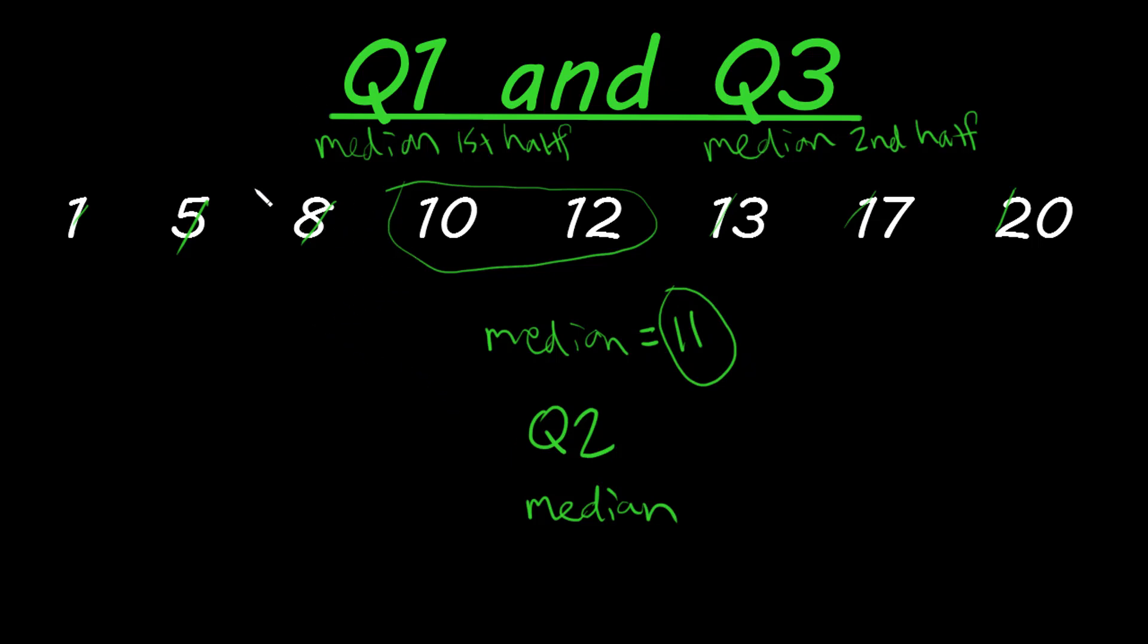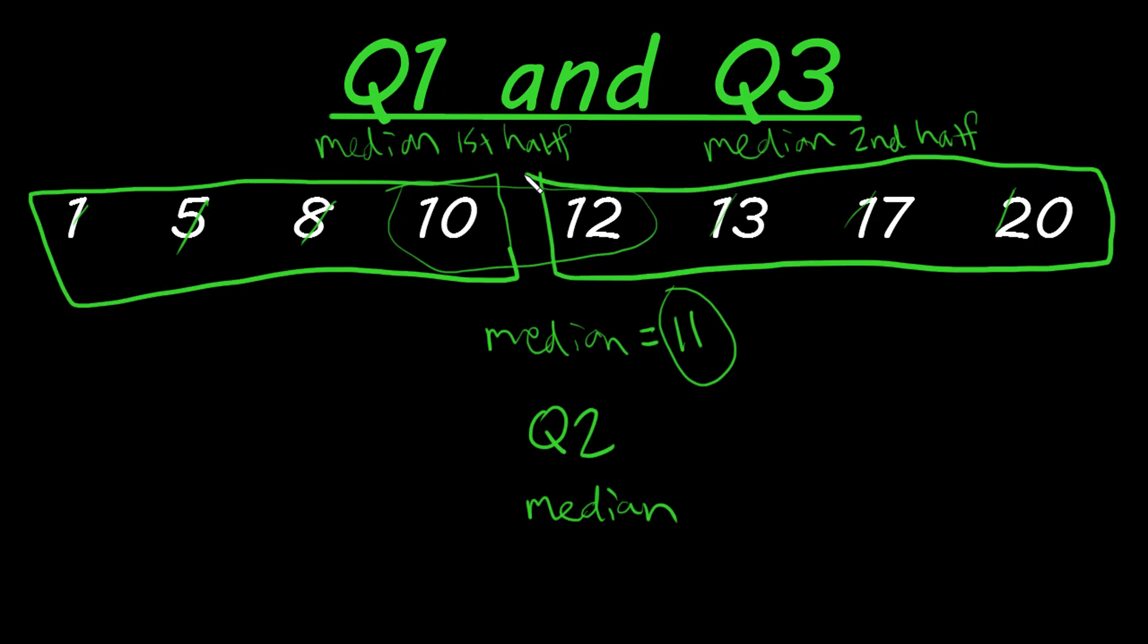So to find Q1, we need to take the median of our first half of data. We have eight data points. We're going to split this into four and four. This is our second half. This is just a quick way to find Q1 and Q3. And so we need to find the median of these four data points to get Q1, the first half.